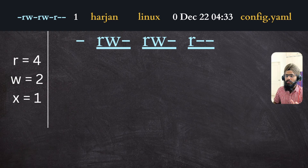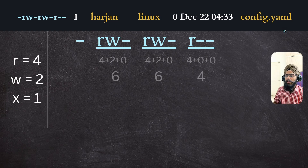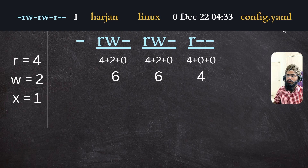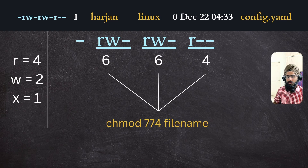Read is 4, write is 2, and executable is 1 — these are reserved numbers. If you add read and write, that gives you 6, so for owner read-write, group read-write, and others read-only, the number is 664. If you also want to give the owner and group executable permission, the number will be 774. For changing file permissions, you use the chmod command.